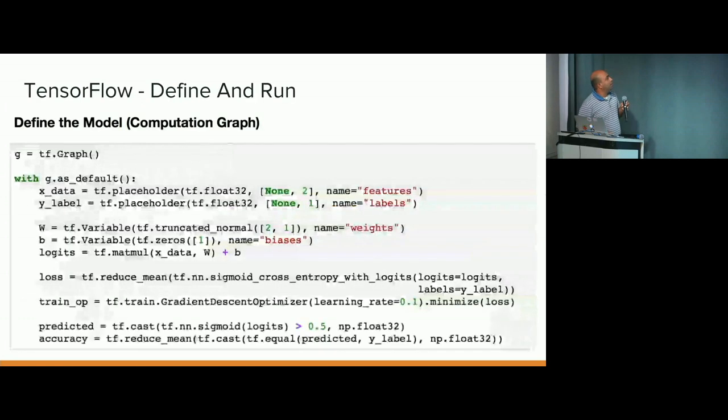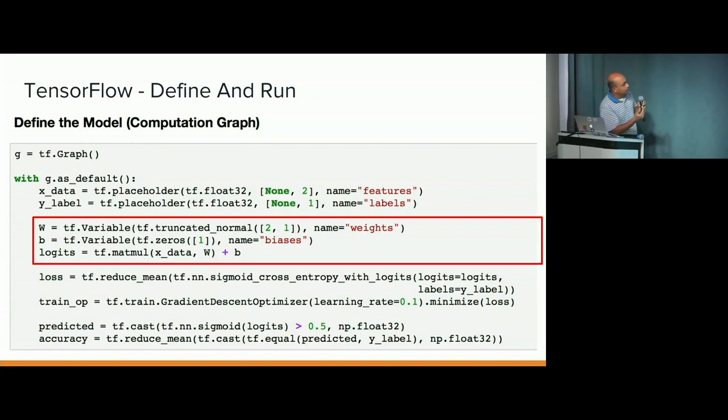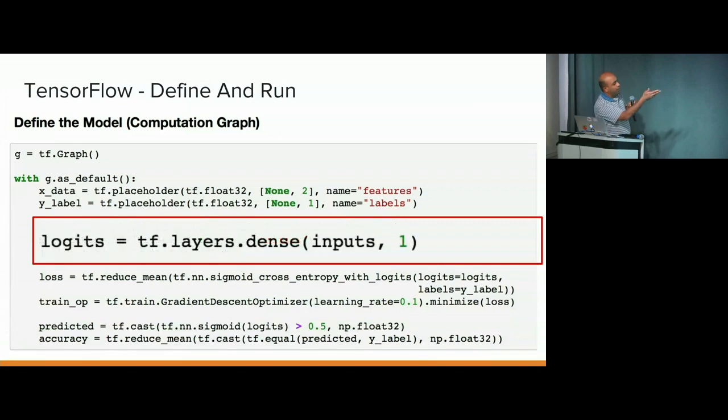How would you do this in TensorFlow? There's one way to do it. There are many ways to do it. So you'll first declare a graph, a tf.graph. And then you will declare inputs x and y. And then you would declare your model, which is weights, biases, and logits. But of course, this is using the core TensorFlow. You can also use the layers API to replace all of that with one line in TensorFlow. And then you go ahead and define your optimizer and the loss functions.